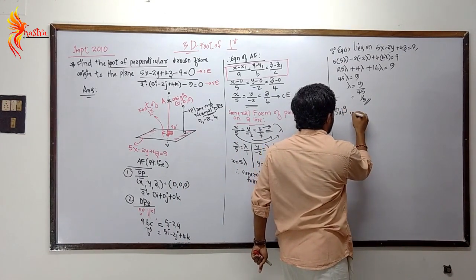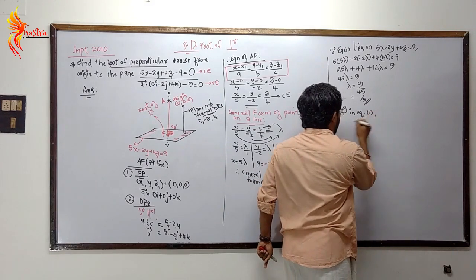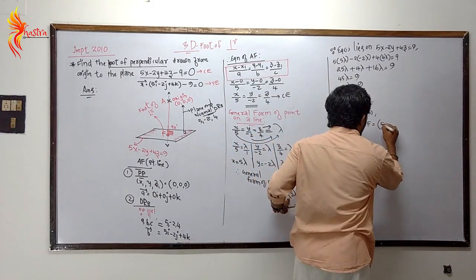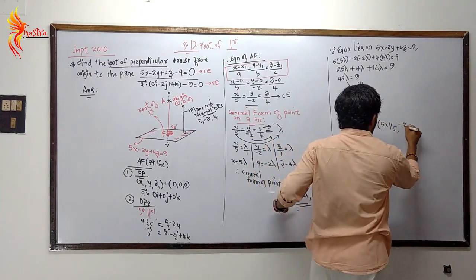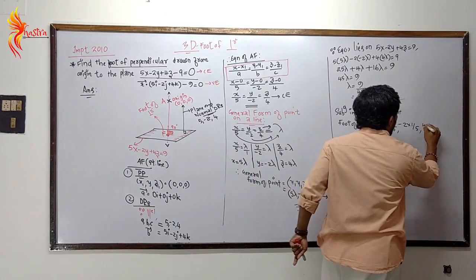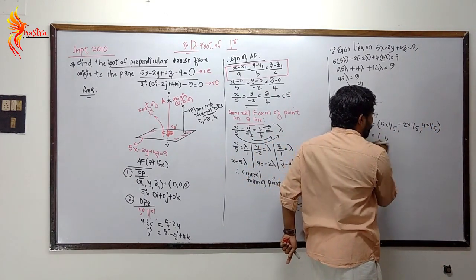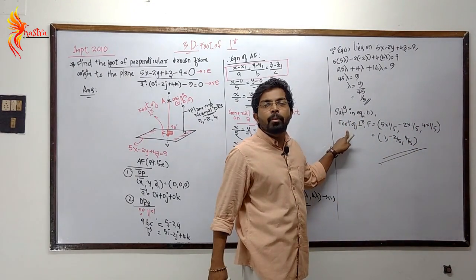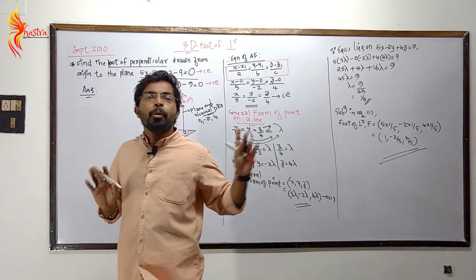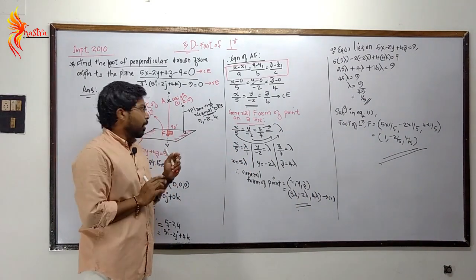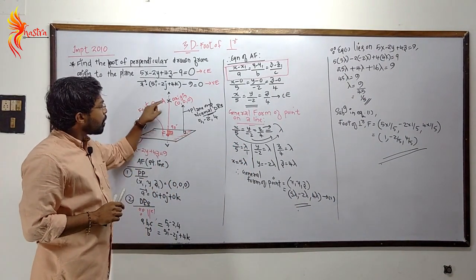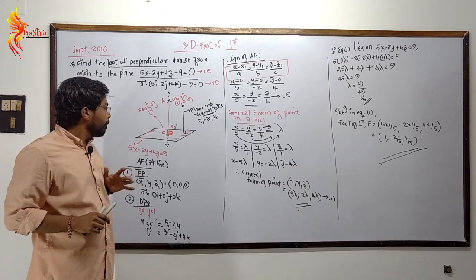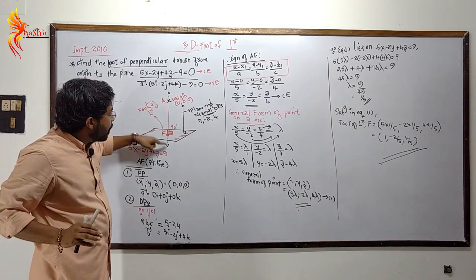Substituting lambda equals 1 by 5 in equation number 1, the foot of perpendicular F is equal to: 5 into 1 by 5, minus 2 into 1 by 5, 4 into 1 by 5, which gives F equals (1, minus 2 by 5, 4 by 5).